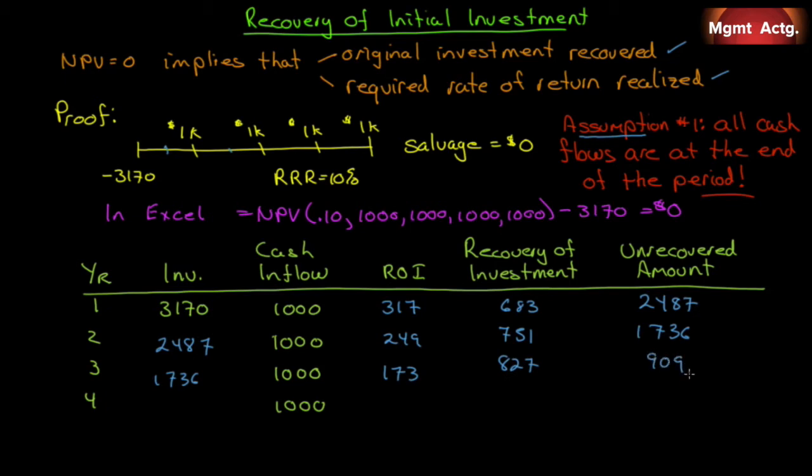Going into year four, we have $909. 10% of that is $91, which means our return recovery of investment is $909. Unrecovered amount now is zero. I have shown you now that by removing the 10%, we completely recover our investment. If we add up all these numbers, we get to $3,170. And you can see that we've recovered. We've taken 10% every year out on ROI. So we've gotten our 10% and nothing more. We've recovered our investment and nothing more.